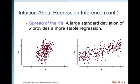The spread of the X's. A large standard deviation of X provides what we consider to be a more stable regression. So the one to the right this time is going to have a more stable regression than the one to the left.